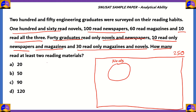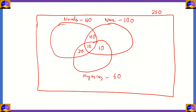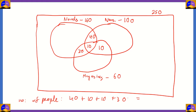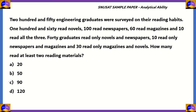Our question is: how many read at least two reading materials? At least two means two and above. The number of people who read two and above reading materials is the number we need to find. As you can see, we have 40 reading novels and newspapers, 10 reading newspapers and magazines, 30 reading magazines and novels, and 10 people reading all three materials. So the required number is 40 plus 10 plus 10 plus 30. 40 plus 30 gives you 70, plus 10 gives 80, plus 10 gives 90. Therefore, a total of 90 people read at least two reading materials, so option C, 90, is the correct answer.